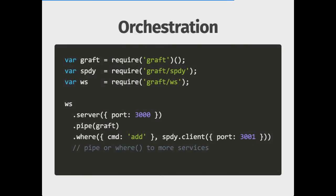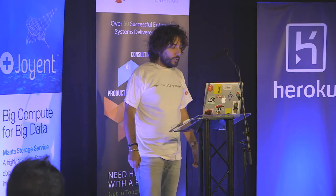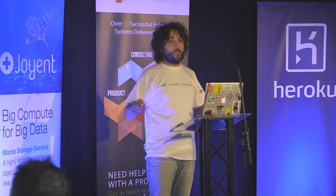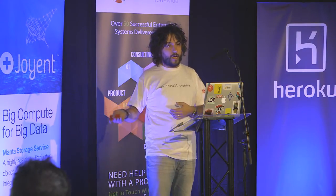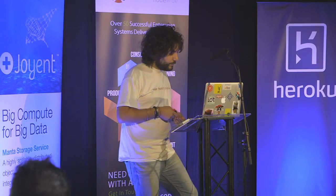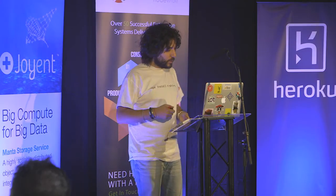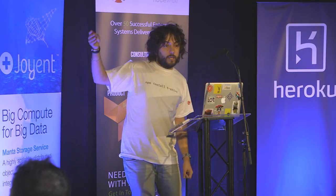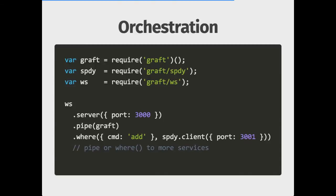We can even have some orchestration support. We are building a massive microservice architecture and we might want some orchestration — some conditions — like: route these messages to that service, route these other messages to this service, or route these messages to A and B. We have a nice 'where' syntax where you can specify an object to be included in the request, and what's matching goes to the second argument, while if not matching, it goes back in the pipeline. This also shows how we expose a service through both Speedy and web socket.